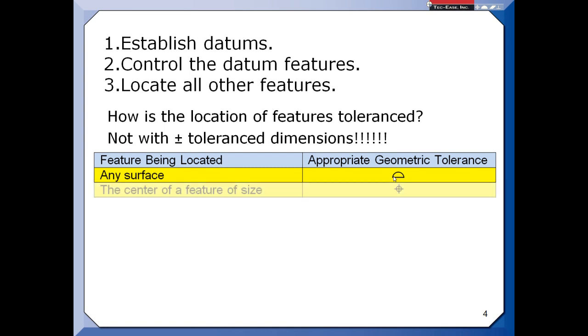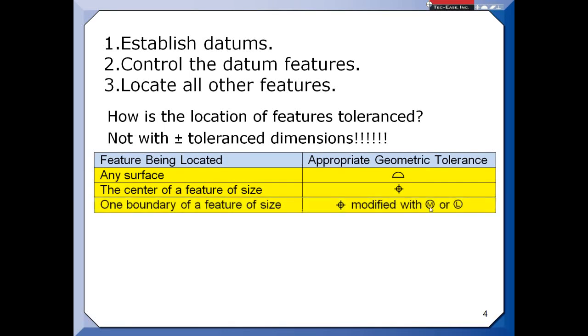However, we do have some special features. We call them features of size. And those features can establish a center, center plane, axis. And for those, we can use position to control where the center is, like the center of a hole. And with position, we can use the maximum material condition if we're worried about fit and free assembly, or at least material condition modifier if we want to make sure we have material for some reason, like the part's going to be machined later on.